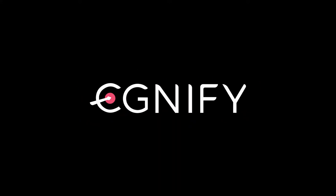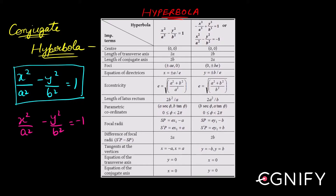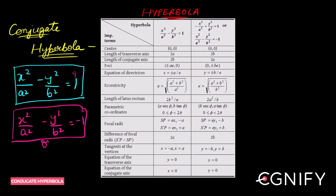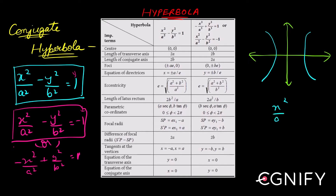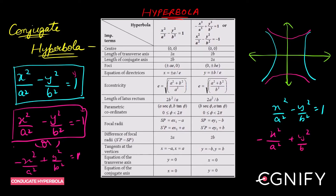Let us now look at the concept of conjugate hyperbola. You have the hyperbola x²/a² − y²/b² = 1. Its conjugate will simply change with a minus sign, which you can also write as −x²/a² + y²/b² = 1. These are your coordinate axes, and this is your hyperbola. The conjugate hyperbola looks like this — the pink arms — where x²/a² has a negative sign and y²/b² = 1.